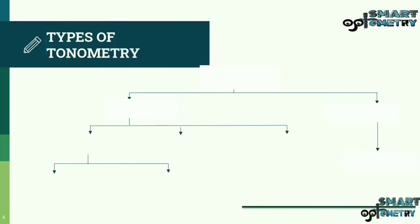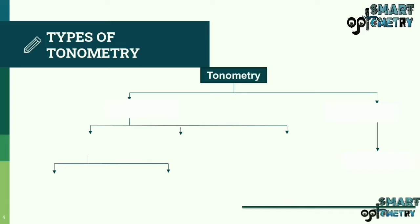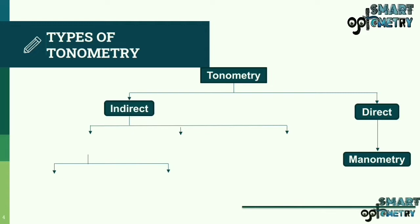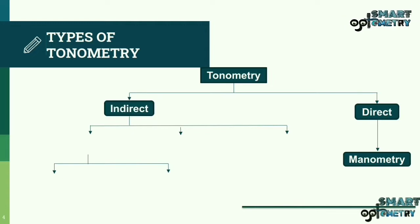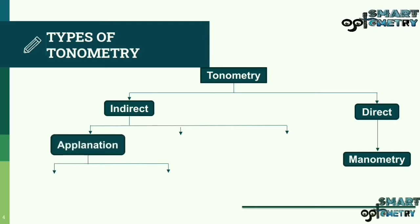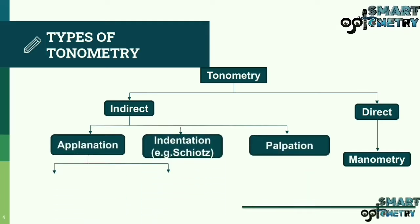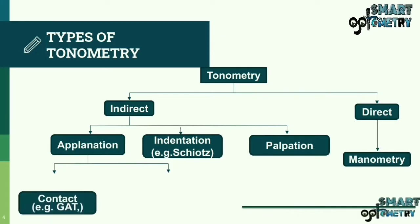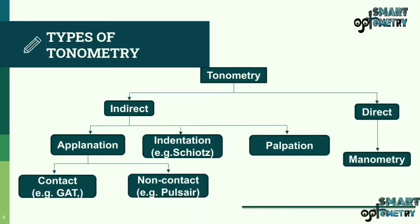Types of tonometry: as shown in this slide, tonometry is basically divided into two parts — direct and indirect. Indirect is further divided into three parts: aplanation, indentation, and palpation tonometry. Aplanation tonometry is further divided into contact and non-contact tonometry.